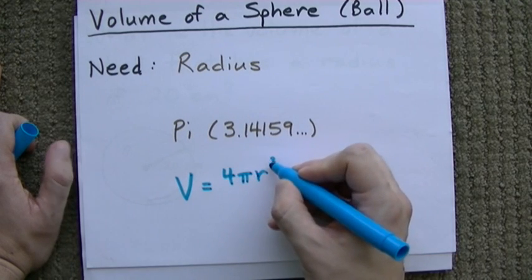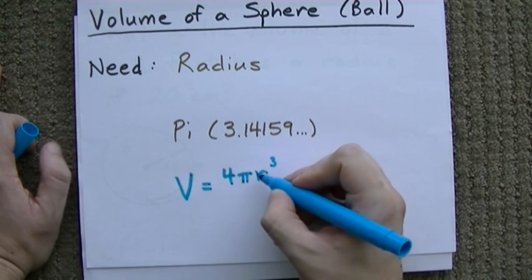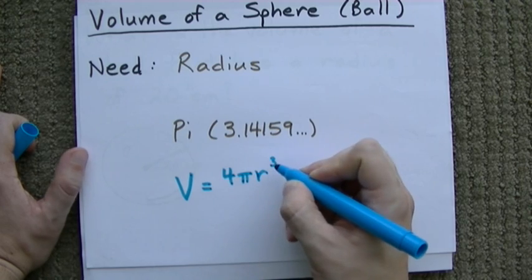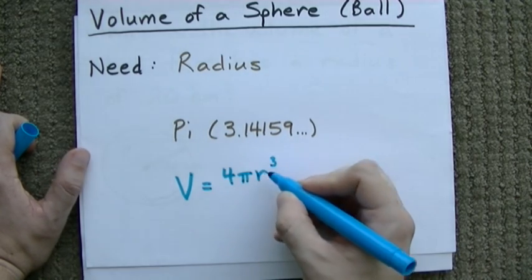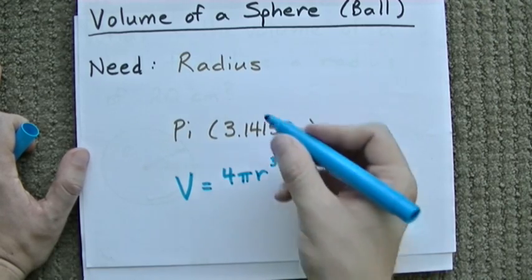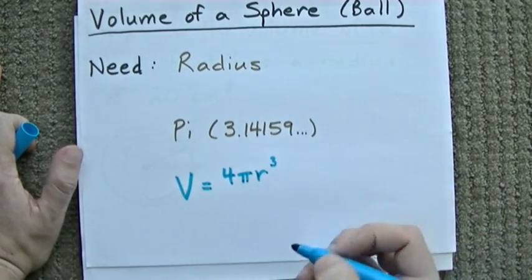Now this button here, or this function, is you taking the radius and multiplying it 3 times. So this is like 4 times pi times r times r times r. And r is your radius, I just use r for radius.